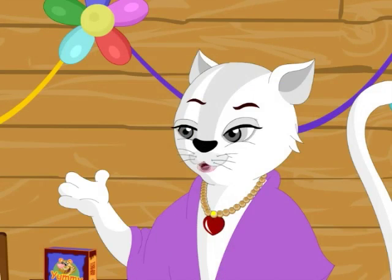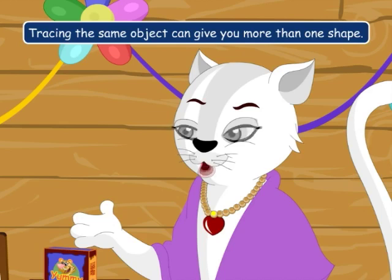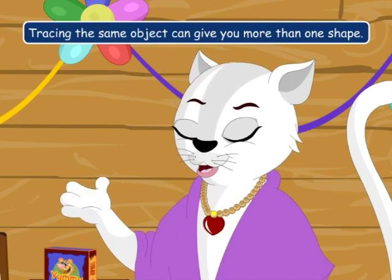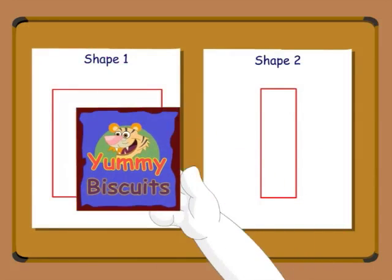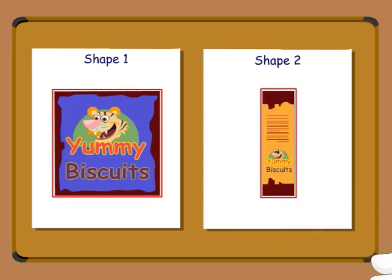Actually, both of you are correct. Sometimes, tracing the same object can give you more than one shape. I will show you how. Now, if I use the label side of the box to trace, I get a square. But, if I use the thinner side of the box to trace, I get a rectangle. Take a look.